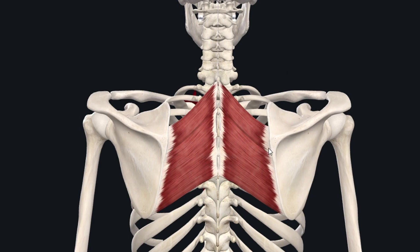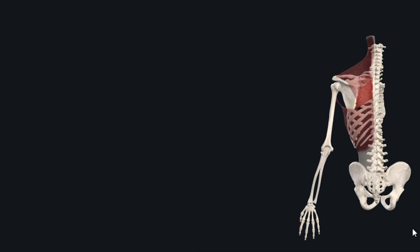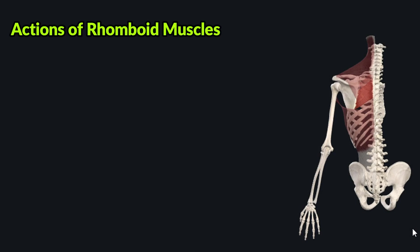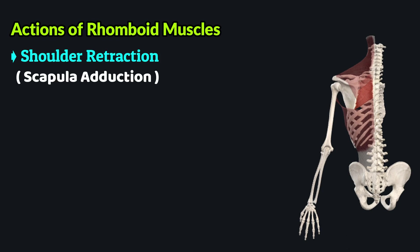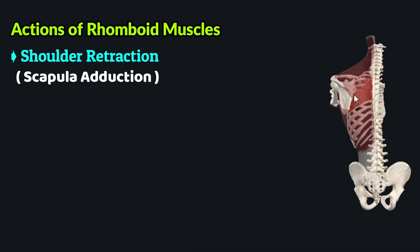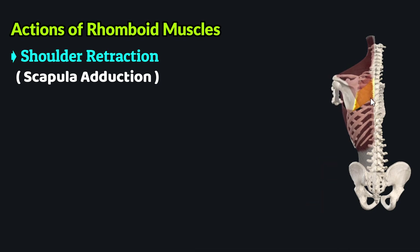The rhomboid muscles mainly perform their functions by acting through their insertions on the medial border of the scapula. An important action performed by the rhomboid muscles is shoulder retraction, also known as scapula adduction. As these muscles contract, the muscle fibers draw the scapula posteromedially, and in this way these muscles adduct the scapula.